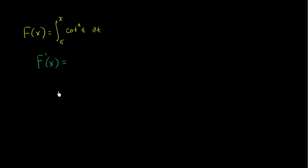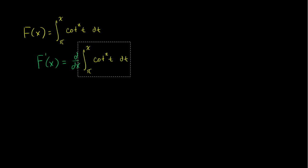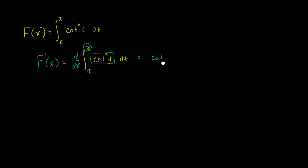Well, this is a direct application of the Fundamental Theorem of Calculus. This is just going to be the derivative with respect to x of all of this. And the Fundamental Theorem of Calculus tells us this is going to be equal to just this function — but not a function of t anymore, it's going to be a function of x. So it's going to be equal to cotangent squared of x.